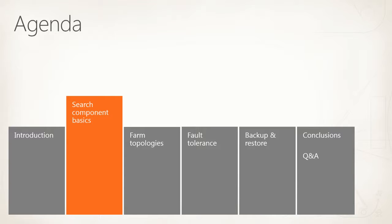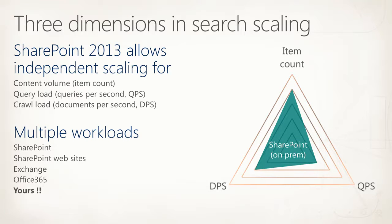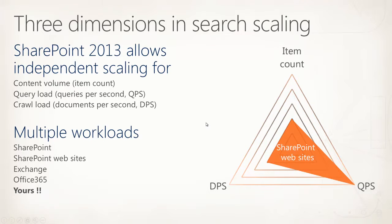We've given you a new search architecture with a lot of new search components. One of the driving factors is that we need to adapt to various workloads. We introduce the ability to scale independently on three different aspects: the item count, the document feed rate in documents per second, and the query rate. This can be done fully independently by varying your topology. The SharePoint on-prem workload is not the most stressful for this new architecture. SharePoint websites go far beyond what's regularly seen on-prem in terms of queries per second, but work with a much smaller product catalog.